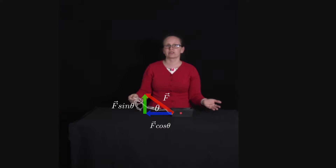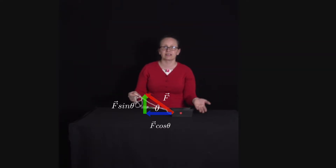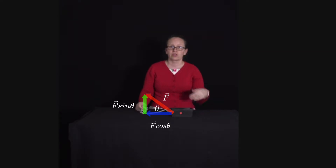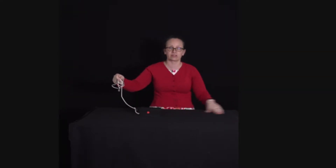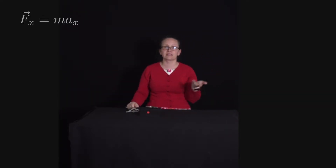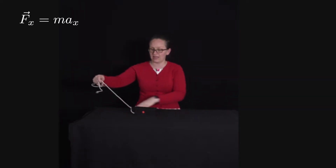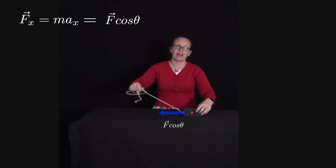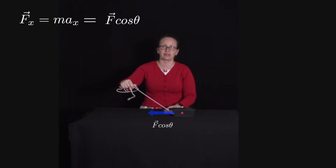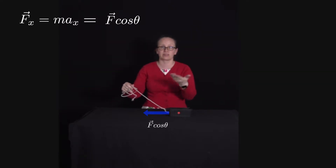We can use Newton's laws and our kinematic equations to work out the change in kinetic energy of the box. Newton's second law tells us that in this case the box is only accelerating in the X direction, the horizontal direction. So the mass times the acceleration in the X direction must equal the X component of the force, as that is the only force acting horizontally. So we have MAx equal to Fx, which equals F cos theta.